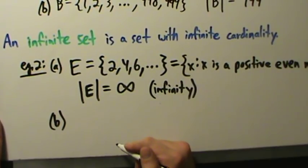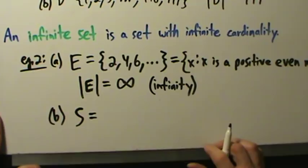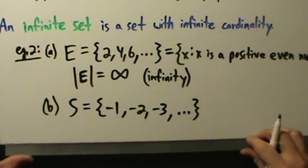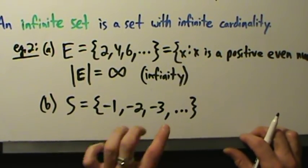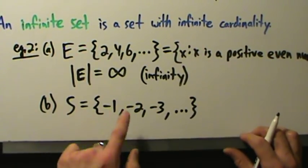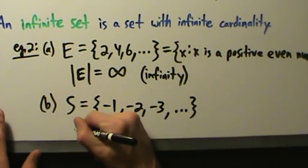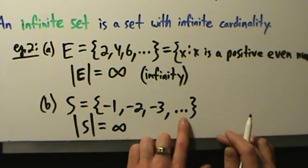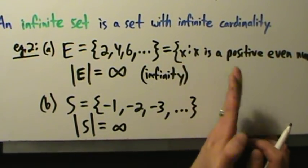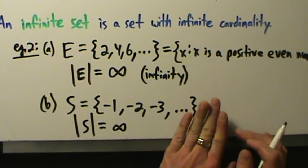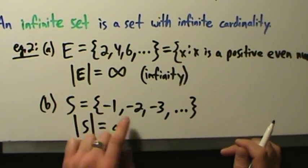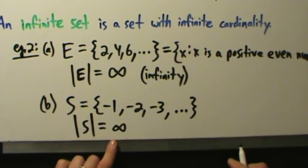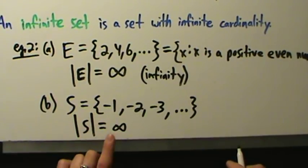Part B: let's say we have set S = {-1, -2, -3, ...}. The dot-dot-dot means continue the pattern — negative 4, negative 5, negative 6, and so on. There's no stopping point after the ellipsis, so we continue forever. We'll never run out of numbers. So the cardinality of S is infinity — again denoted with the infinity symbol, an 8 on its side.